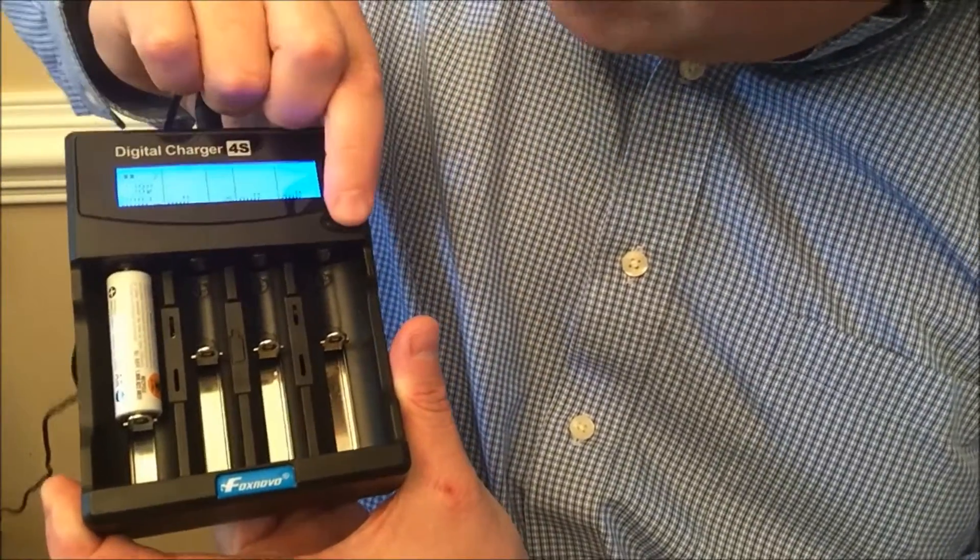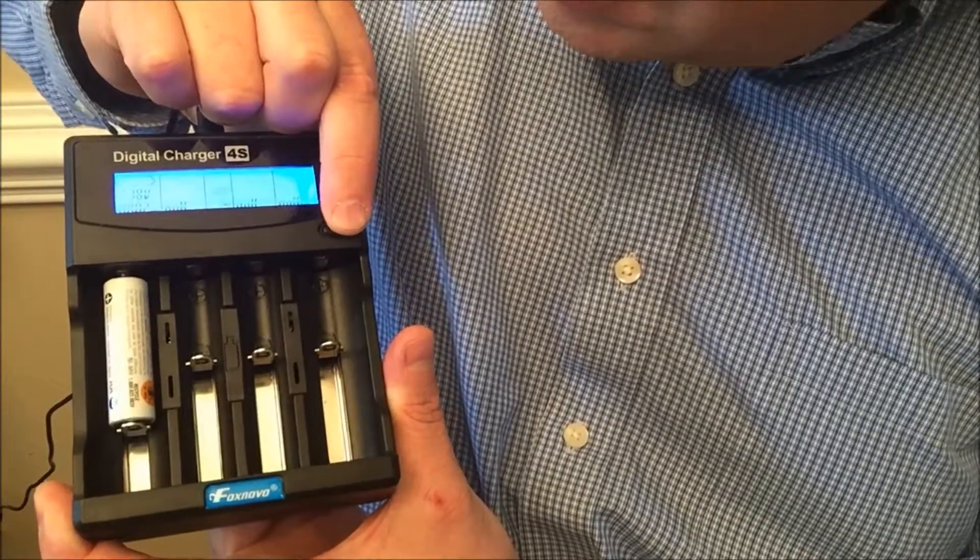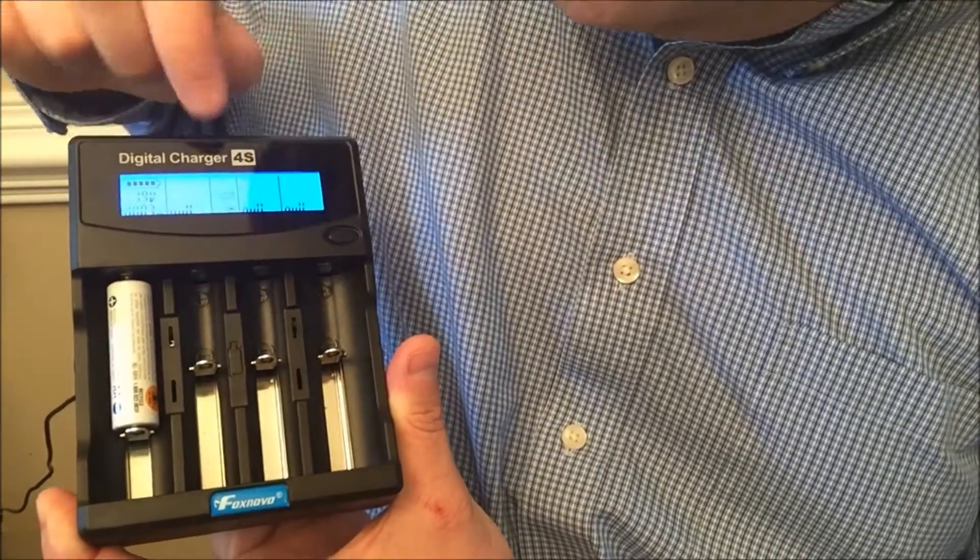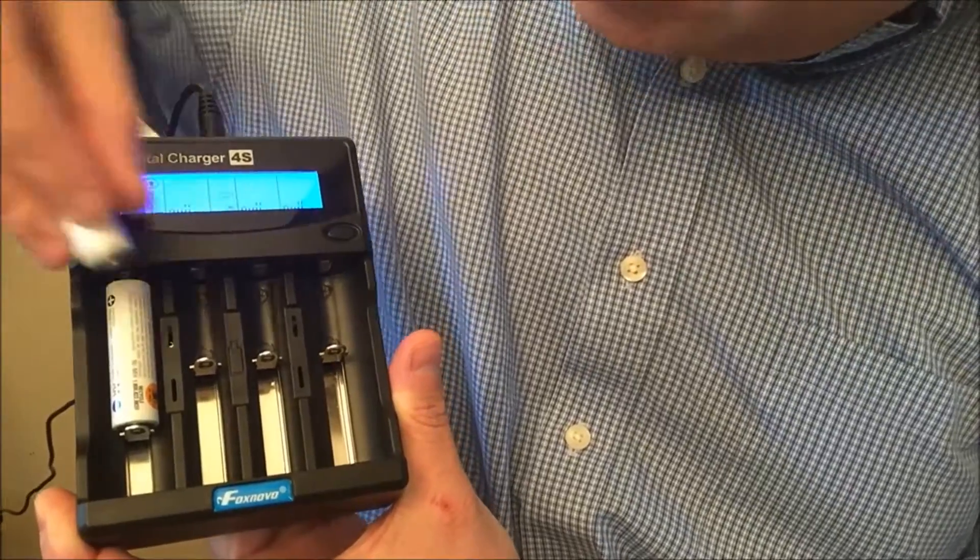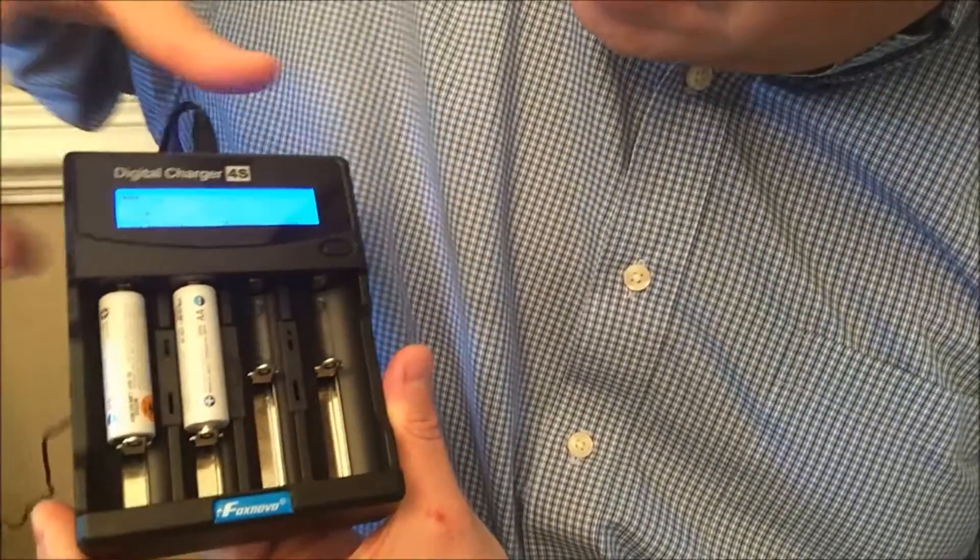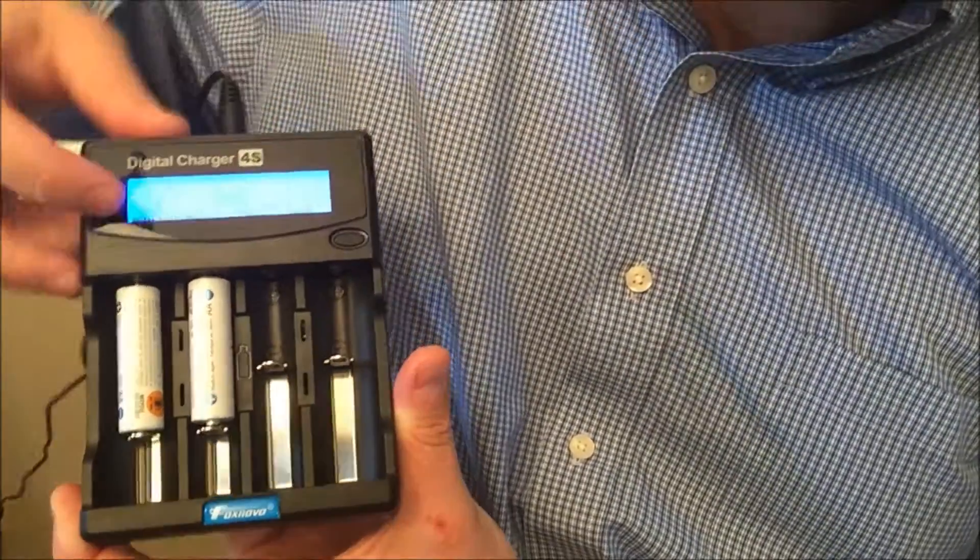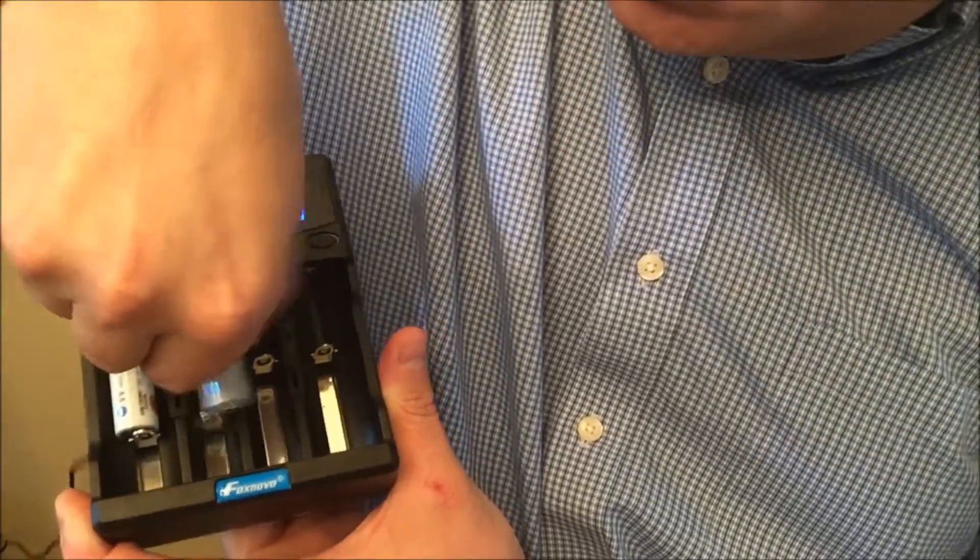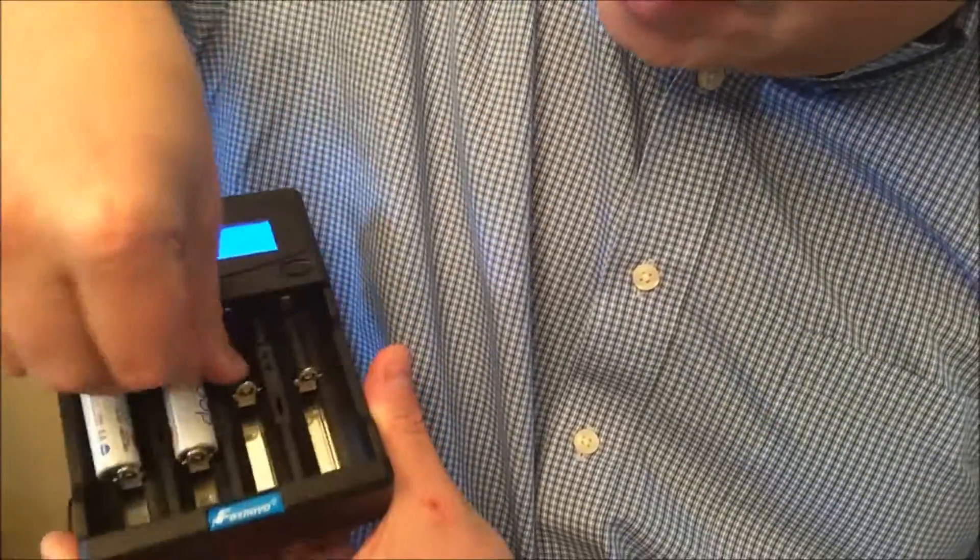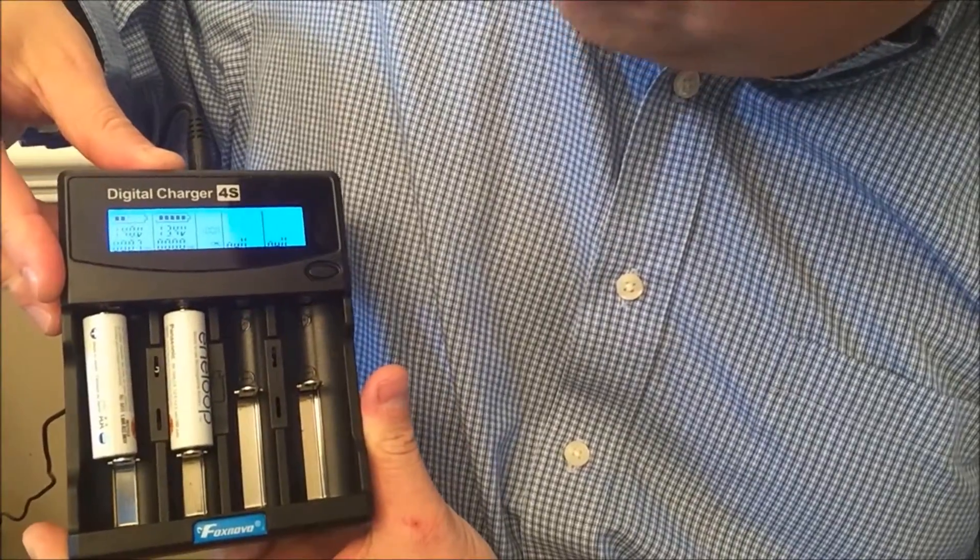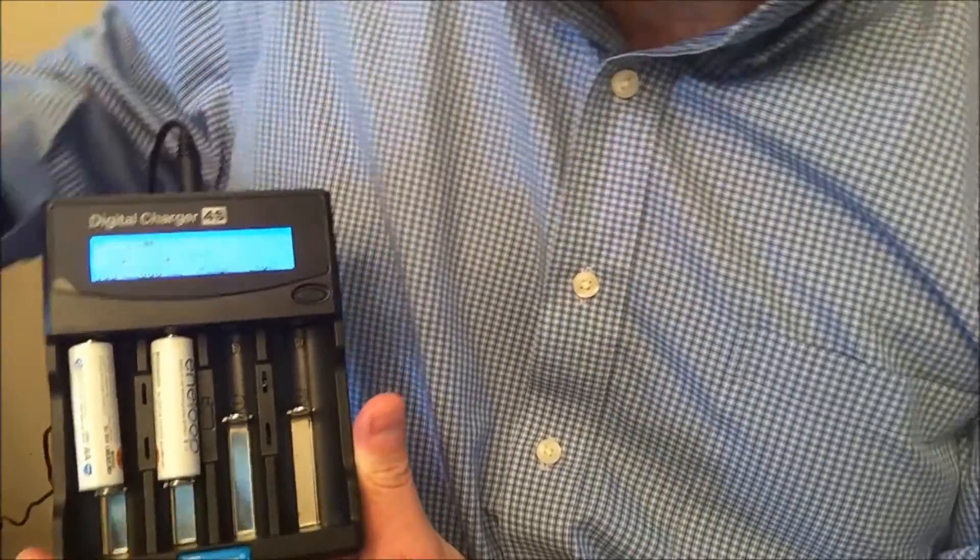To change this from 0.5 amps to 1 amp, you just push the button, and it changes it to 1 amp. Let's put one in backwards and see what happens. Right there, it stays null. So that's good. In case you do put it in backwards. Let's go ahead and plug that in correctly, and that one's at 1.34 volts.